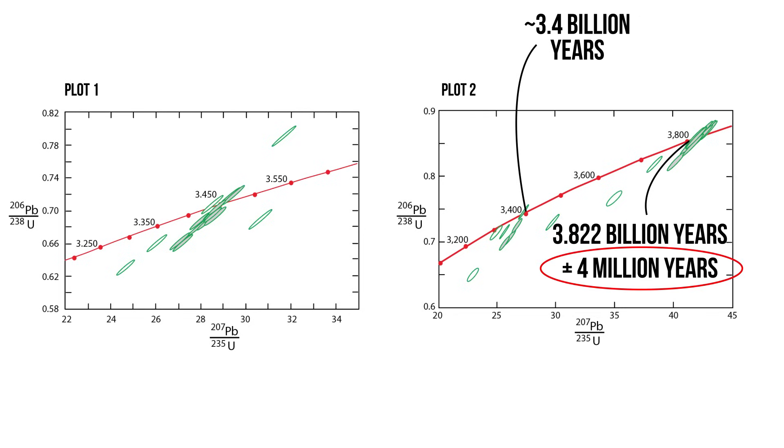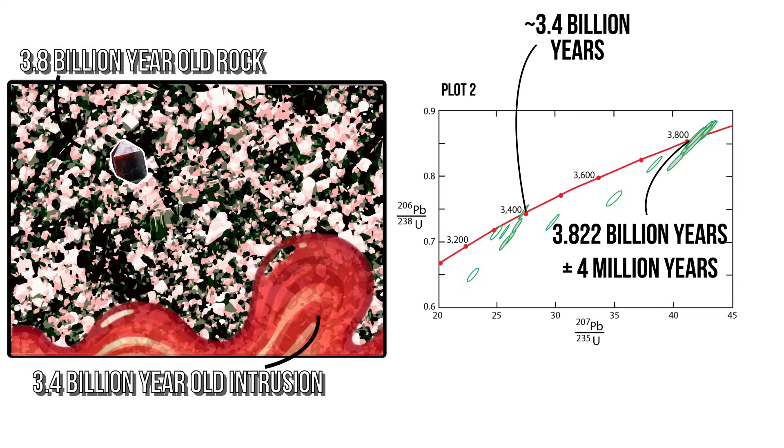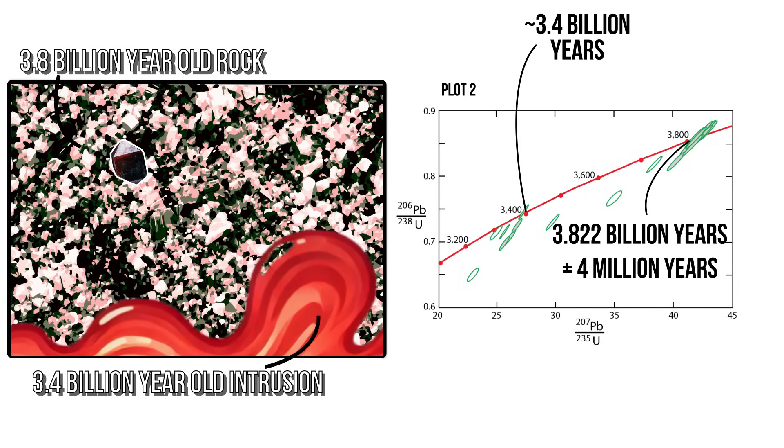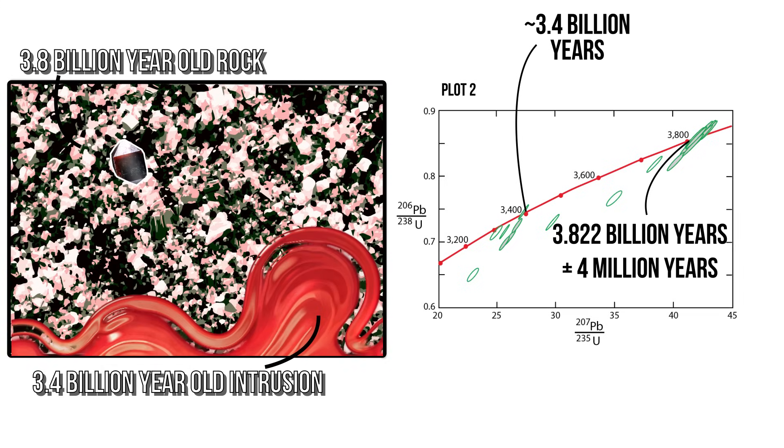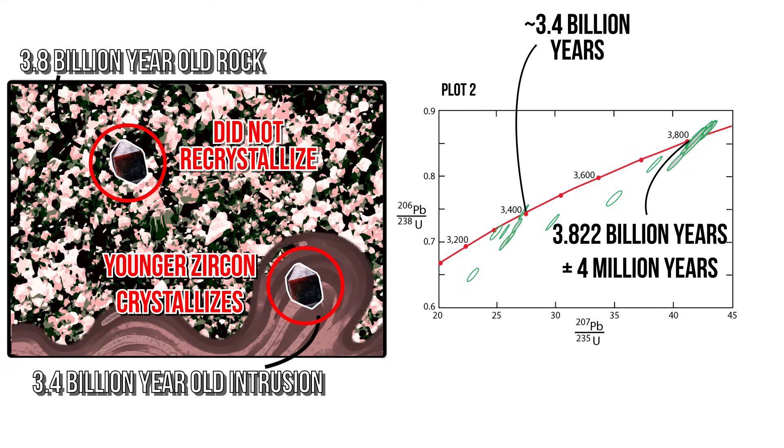The scientists who dated these rocks interpreted their results to indicate that magma that had intruded into the crust approximately 3.4 billion years ago, melted an older 3.8 billion year old rock containing zircon. These 3.8 billion year old crystals did not melt or recrystallize, but hung on to their uranium and lead, and therefore remember the age at which they originally crystallized some 3.8 billion years ago.